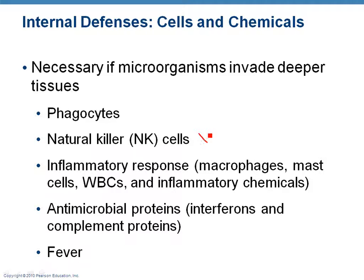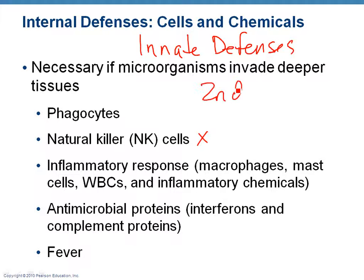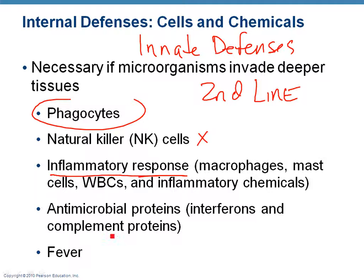Natural killer cells — you'll hear about those when you take microbiology. These are all part of the innate defenses, the second line. You have phagocytes, the inflammatory response, and some antimicrobial proteins, which are essentially like antibiotics that your immune system produces to help combat invading microbes, plus the process of fever.